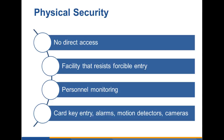Physical security: you want to make sure that employees have no direct access to any component or element of the physical organization that they are not allowed to access. The facility should resist forcible entry. Personnel should be monitored, perhaps with CCTV or other methods. You should have card key entry, alarms, motion detectors, and cameras. There should be at least two-factor authentication to allow authorized personnel into the building — for example, user ID and password combined with biometrics or a card key. Alarms and motion detectors are important in the case of someone trying to break into the physical facility without authorization.